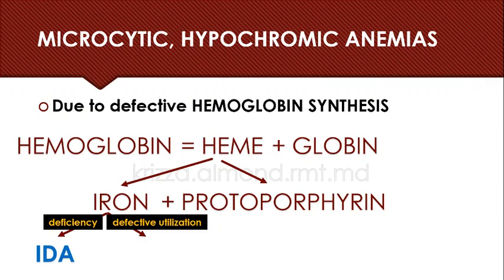The kind of anemia that arises from this problem — defective iron utilization — is called the anemia of chronic disease, now commonly referred to as anemia of chronic inflammation.